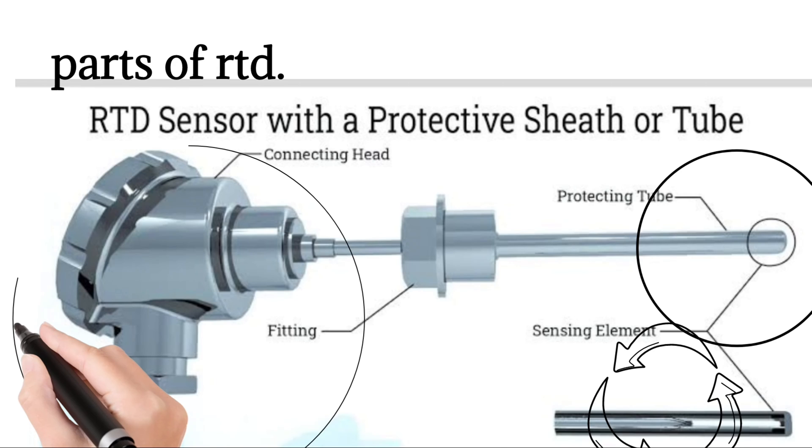Working of RTD. Suppose we want to monitor the temperature of an oven. To do this work, the probe of an RTD is inserted into the oven. Due to the temperature of the oven, the resistance of the sensing element of the RTD varies correspondingly.